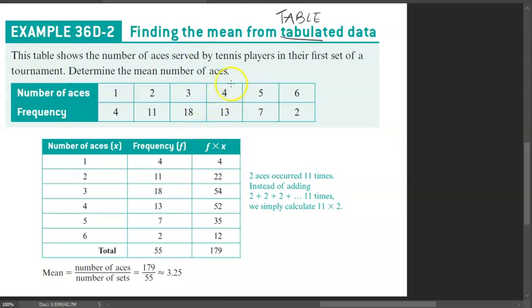So the number of aces from a certain player, they just scored one. So if they scored one ace within their tournament, they have just one ace. And this number here, the frequency tells me how many people scored only one ace within the tournament. And this is four. So four people scored that.